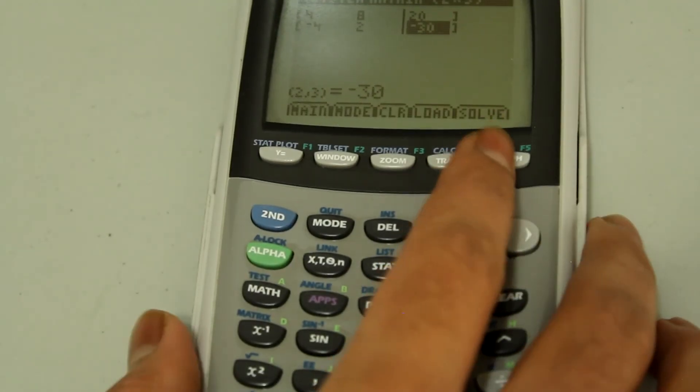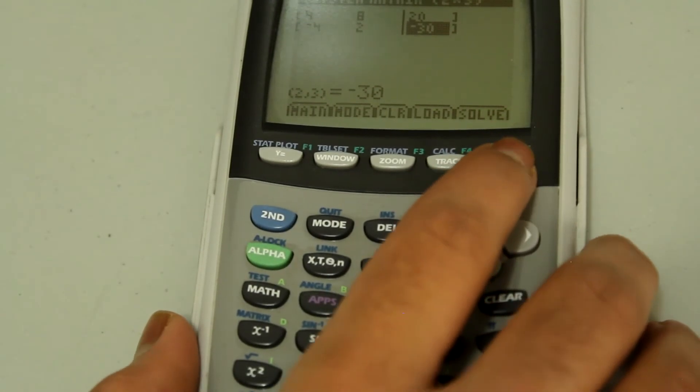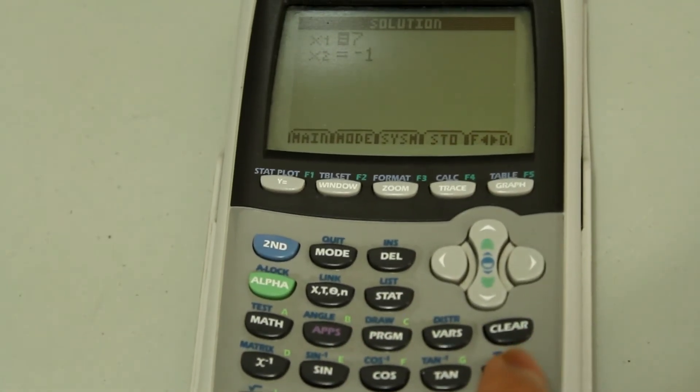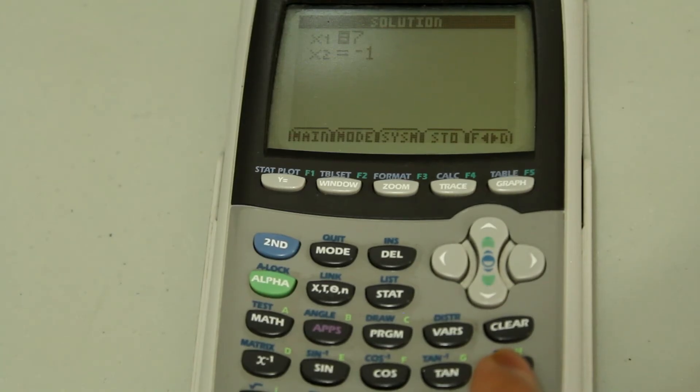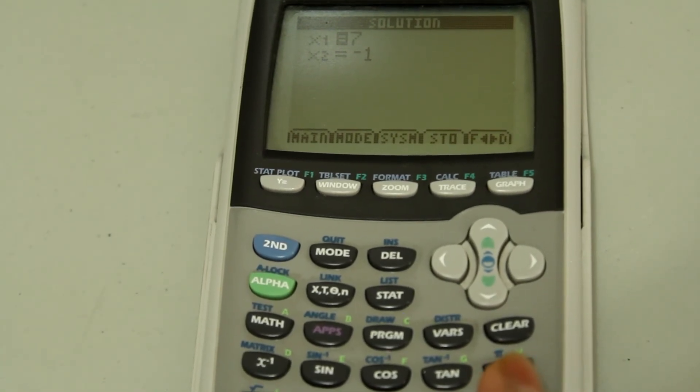Enter. And hit the graph button right under solve. And that gives you X1 as 7 and X2 as negative 1. And your X2 is just your Y value.